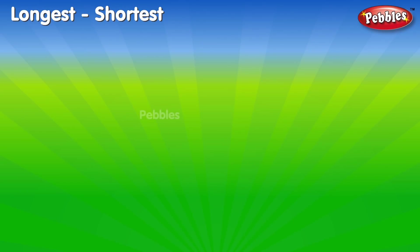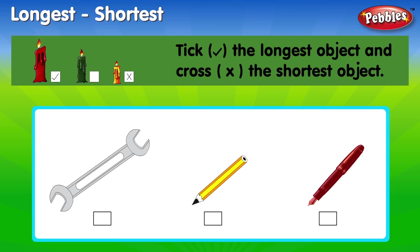Longest, shortest. Tick the longest object and cross the shortest object.